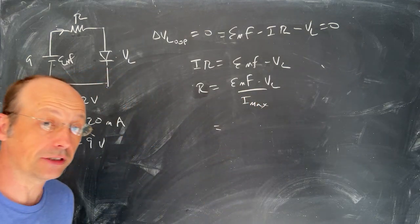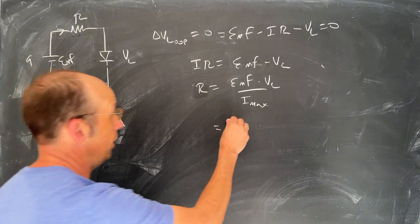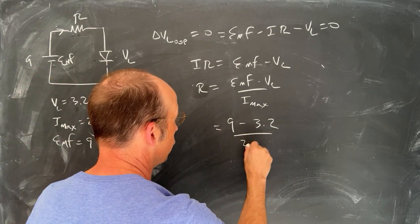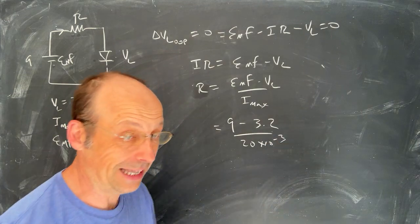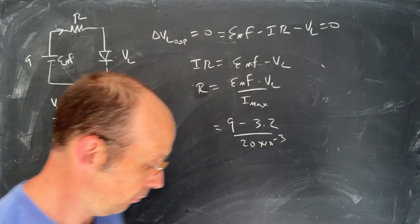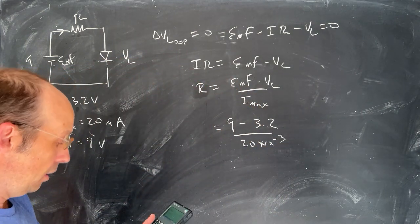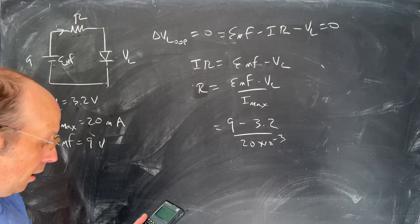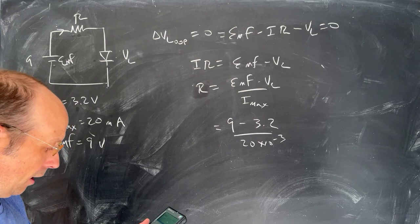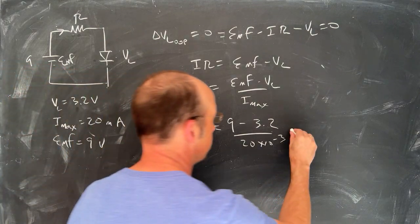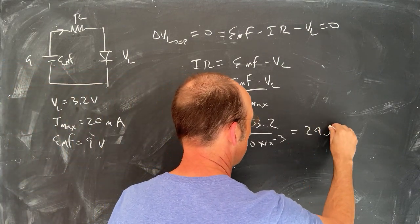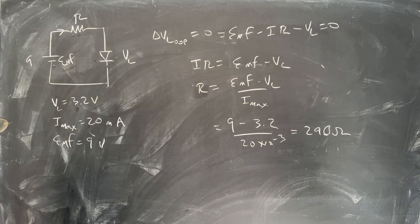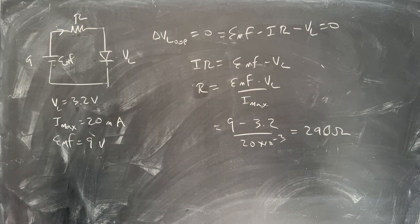So let's calculate the value of that resistor that we can put in there. I have 9 volts, I have 3.2 over 20 times 10 to the negative 3, because it's 20 milliamps. Okay, so let's put that in the calculator. So 9 minus 3.2 divided by 20 times 10 to the negative 3, and I get 290 ohms.